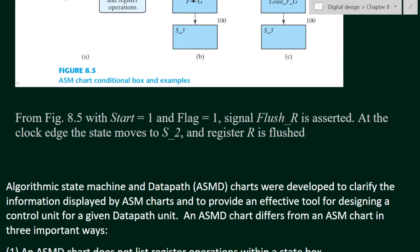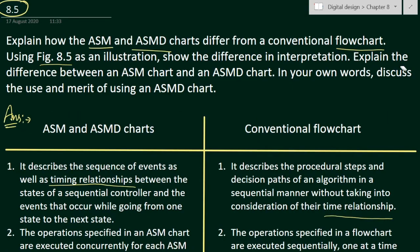From figure 8.5, with start equal to 1 and flag equal to 1, the signal '+R' is asserted — meaning this signal is executed at the clock edge. The states move to S2 and register R is flushed, meaning the register is cleared.